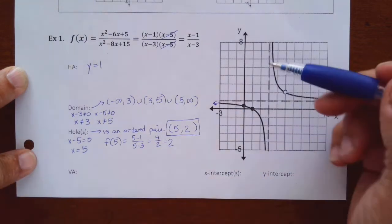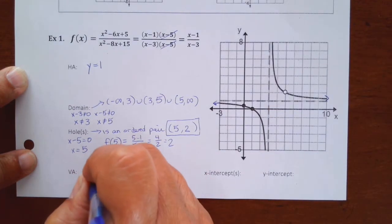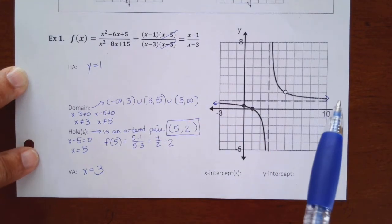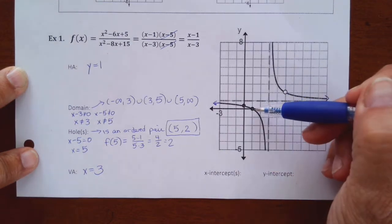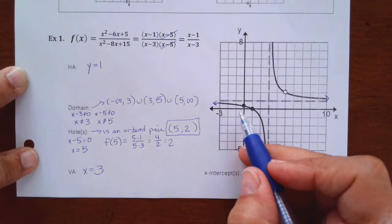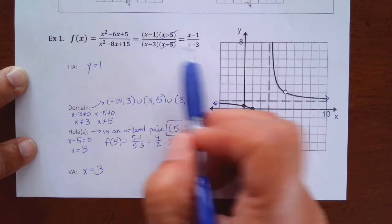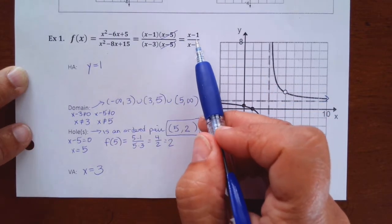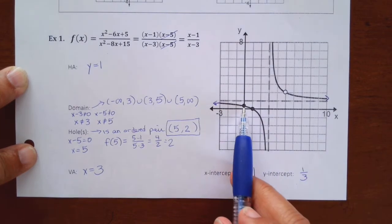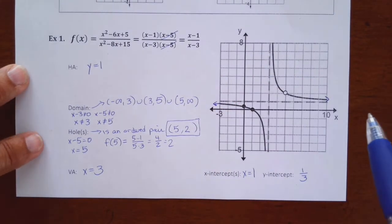The vertical asymptote is the vertical line your graph is not crossing. Here it would be x equals three — that comes from the numbers in the denominator that are not holes. The x-intercept is where your graph crosses the x-axis; in this problem it only crosses at one. The y-intercept is where your graph crosses the y-axis. To find it, let x be zero: zero-minus-one over zero-minus-three gives negative one over negative three, which is one-third.